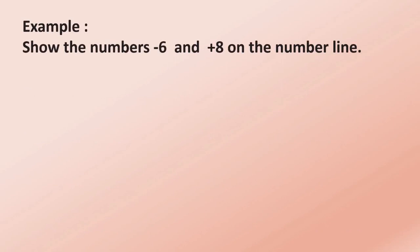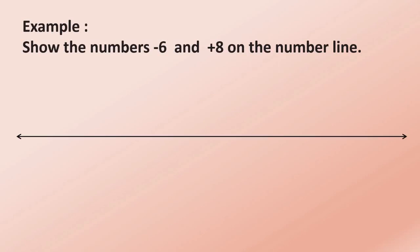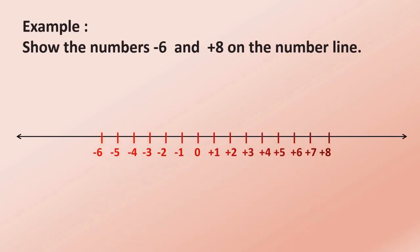Let's see an example. Show the numbers minus 6 and plus 8 on the number line. Here we have to show the numbers minus 6 and plus 8 on the number line. On the right side of the origin all are positive numbers, and on the left side of the origin all are negative numbers.